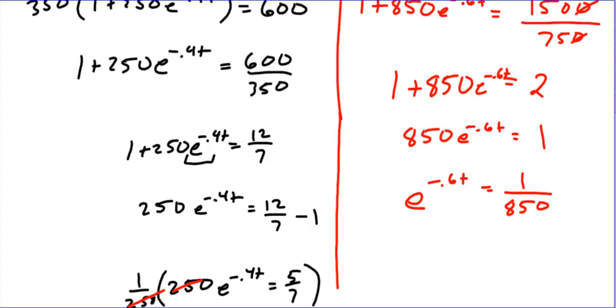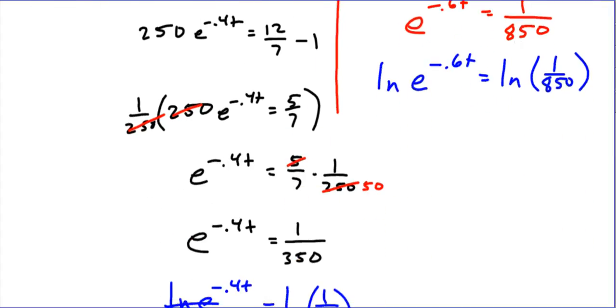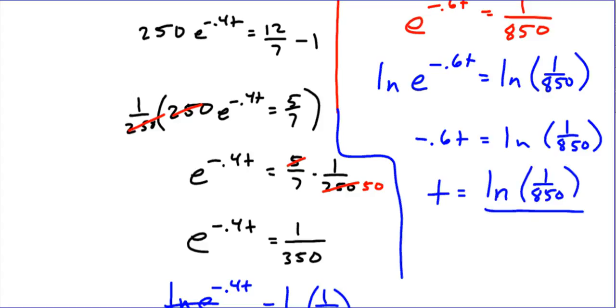Now from here, once again we're left with our basic exponential. How do you solve an exponential? We're going to natural log this time. We're going to natural log e to the negative 0.6t, natural log 1 over 850. And then finally, that basically results in negative 0.6t equals natural log of 1 over 850.